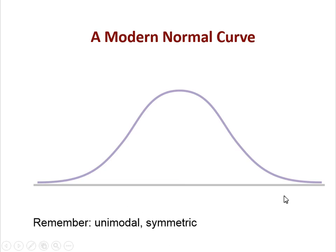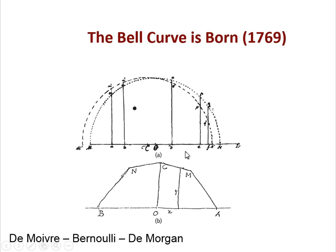We tend to call this the normal curve now, which always makes me laugh because it's like the least likely thing you're going to get in real data. Just a reminder from previous lectures: it is unimodal and symmetric, which is very important — you have one hump and it must be symmetric.